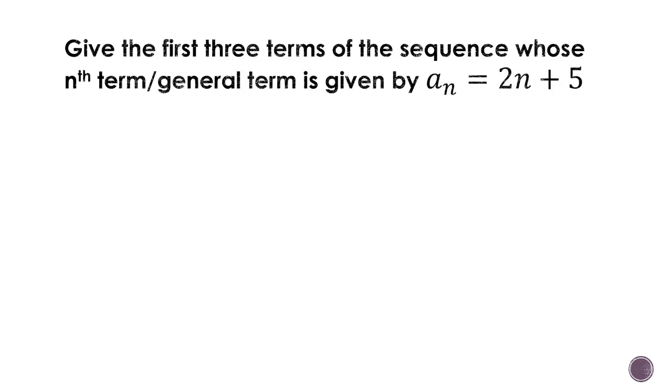Let's have more examples. Give the first 3 terms of the sequence whose nth term or general term is given by a sub n equals 2n plus 5. There's no sequence given here, but we are asked to give the first 3 terms: first term or a sub 1, second term or a sub 2, and the third term or a sub 3. What we'll do here is simply substitution. For a sub 1, we're going to substitute 1 in place of n.